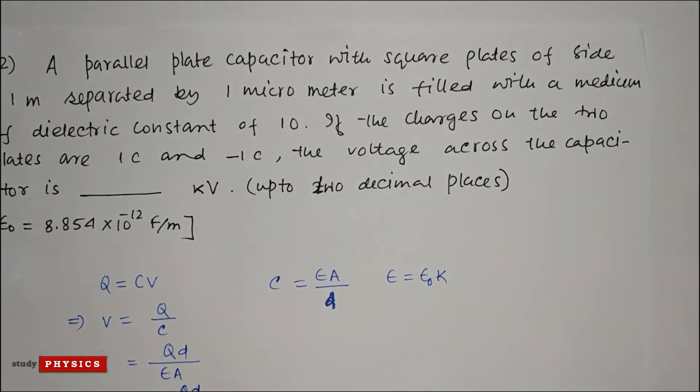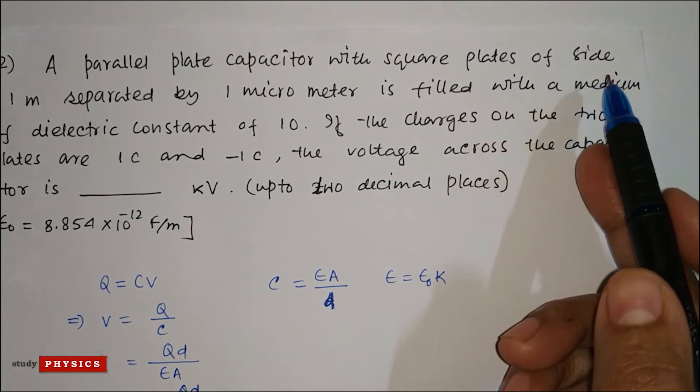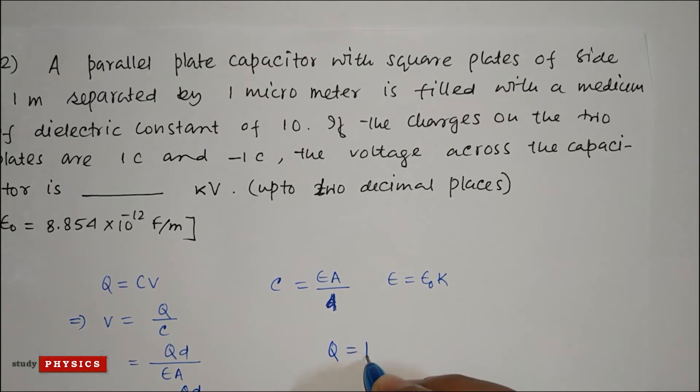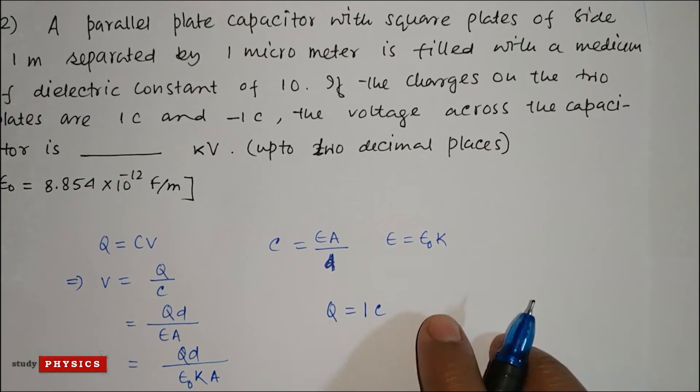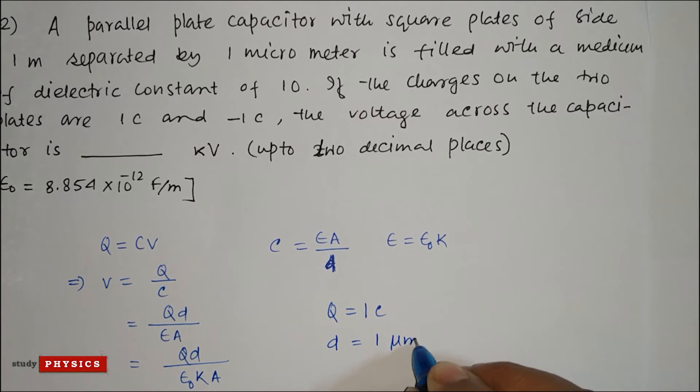So here they have given all the values. Q is 1 coulomb, just taking the magnitude. Then d, separated by 1 micrometer, which is 10 to the power minus 6 meters.